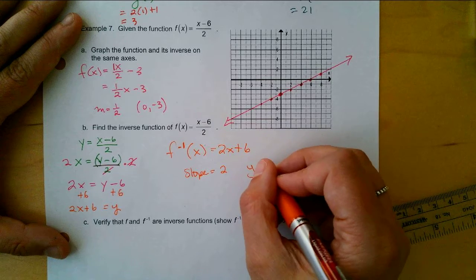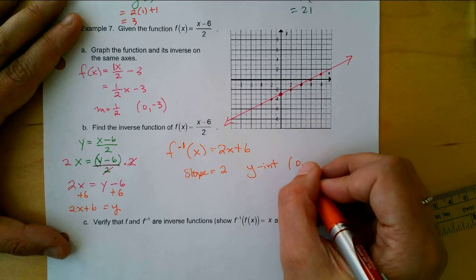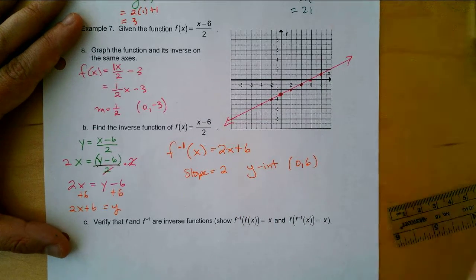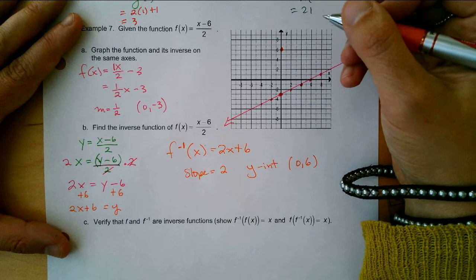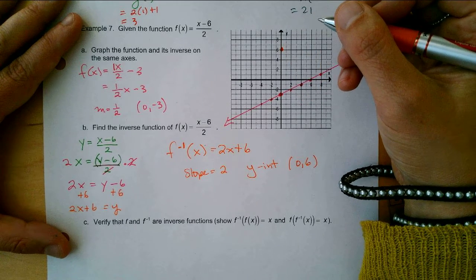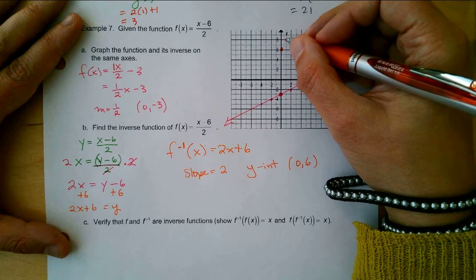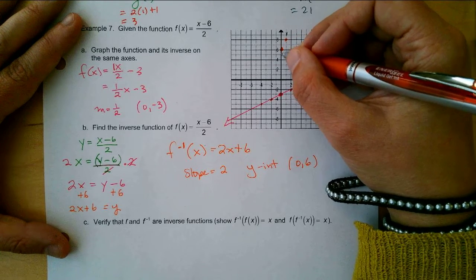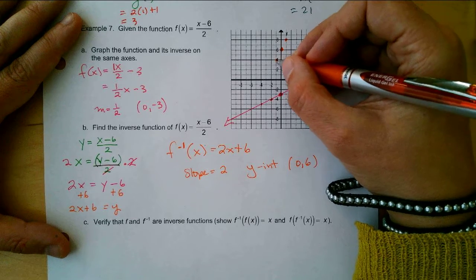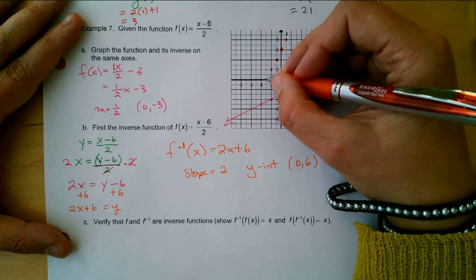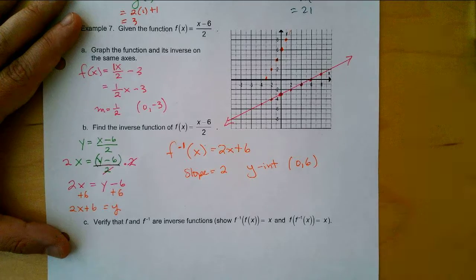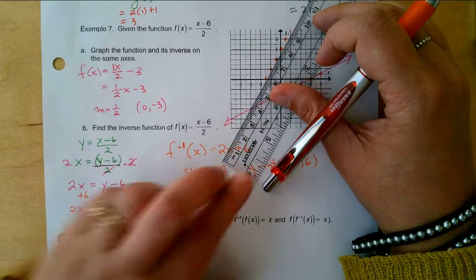So let's go ahead and graph that. What's the slope and what's the y-intercept? (0, 6). The slope is rise 2, run 1, rise 2, run 1. And so then we can use our ruler.